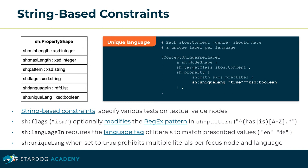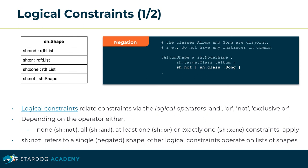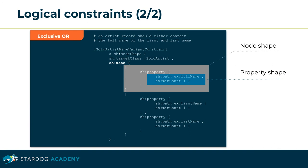Logical constraints relate other constraints by the logical operators AND, OR, NOT, and EXCLUSIVE OR. Depending on the operator, either none, all, at least one, or exactly one of the combined constraints apply. Please note, the NOT constraint refers to a single shape it negates, whereas other logical constraints operate on lists of shapes. The example shape states that instances of the class ALBUM should not at the same time be of type SONG, expressing the disjointness of both classes. This example illustrates the use of the logical constraint XOR. It requires a solo artist to either specify a full name or a combination of first name and last name, but not both alternatives at the same time.